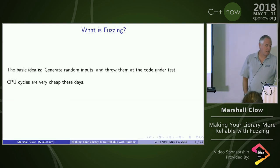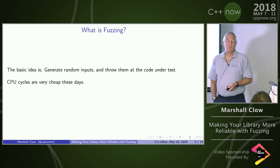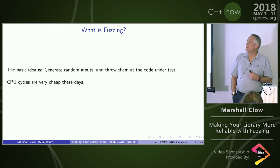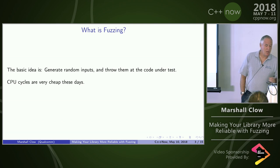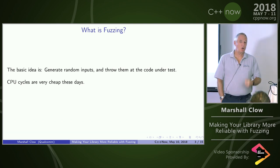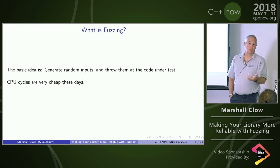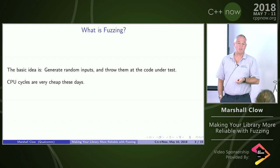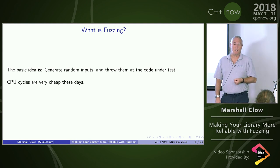So we'll start off with: what is fuzzing? Fuzzing is a way to find problems in your code. It's predicated on the idea that CPU cycles are cheap. And I'm going to start with a story. A coworker of mine a few years ago wrote a function that took a single precision floating point number and returned an enumeration value. If you're familiar with fpclassify, you can think of it as he's writing fpclassify, because it was something like that.